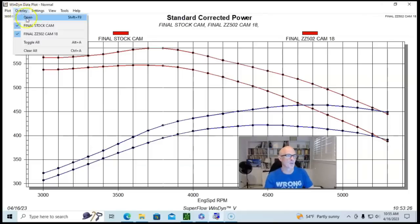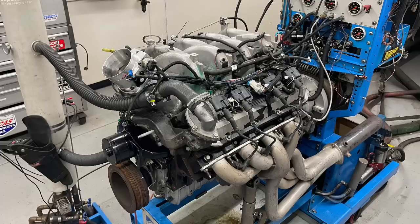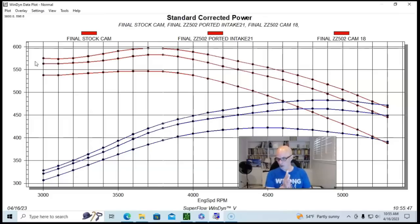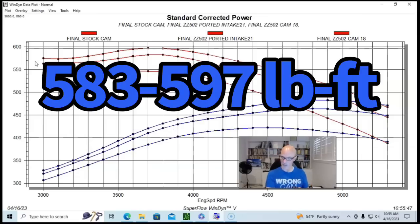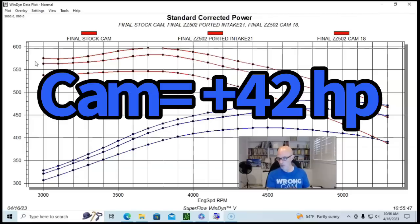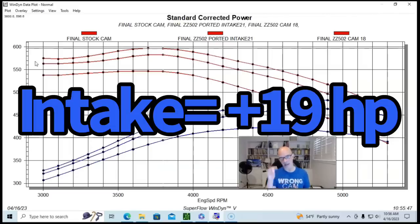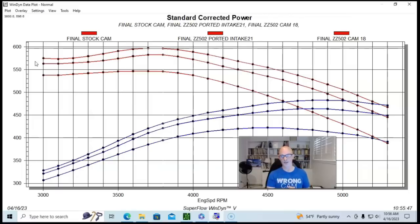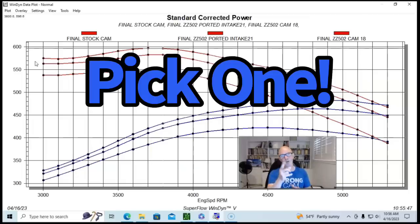So the ported intake manifold picked power up everywhere and went from 464 horsepower and 582 or 583 foot pounds up to 483 horsepower and 597 foot pounds. So the camshaft upgrade on the 8.1 improved the power by 42 horsepower and 36 foot pounds. And then the intake manifold added another 19 horsepower and 14 foot pounds torque. Let's take a look at a comparison now between the 5.3 and the 8.1 in stock and modified trim and tell me which one you would want.